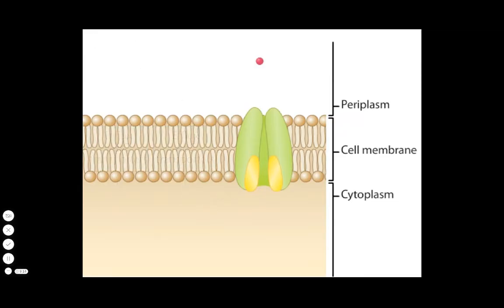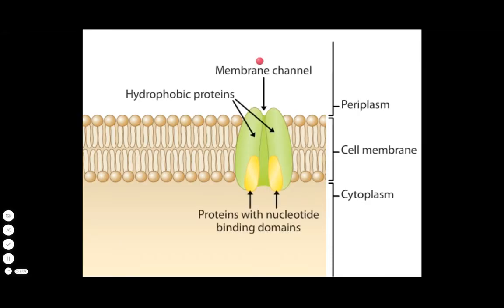An ABC transporter typically consists of two hydrophobic proteins that form a membrane channel and two peripheral cytoplasmic proteins with nucleotide binding domains for binding to ATP.